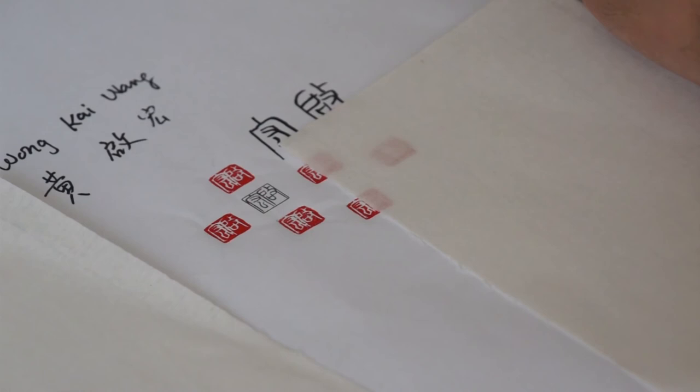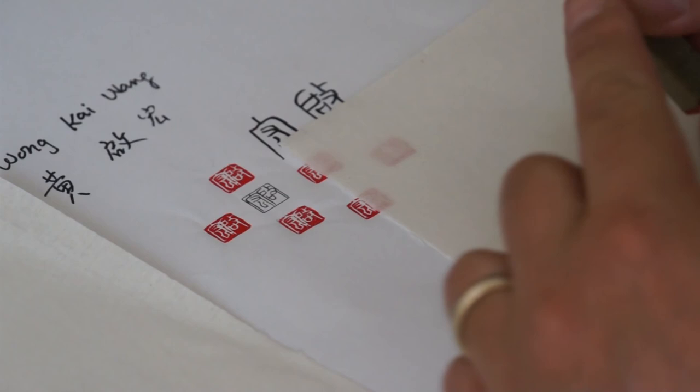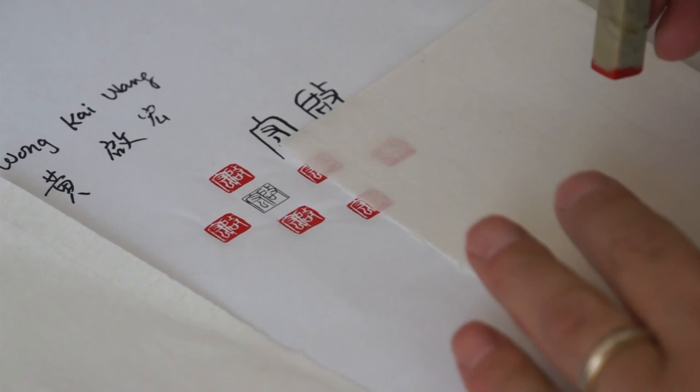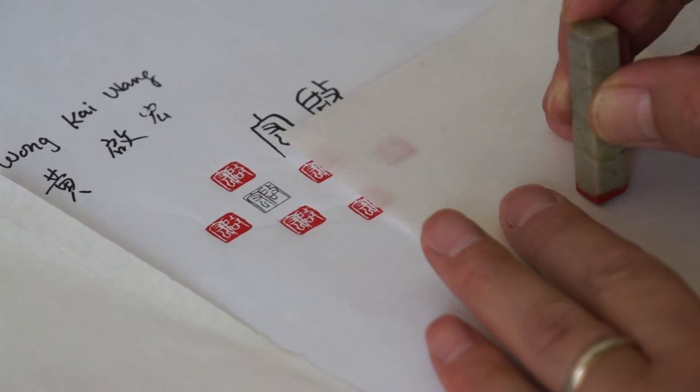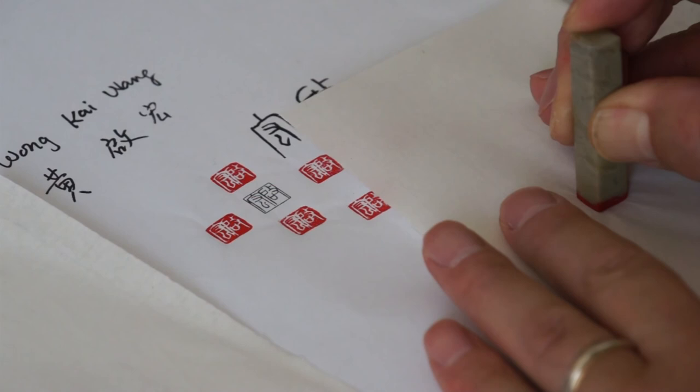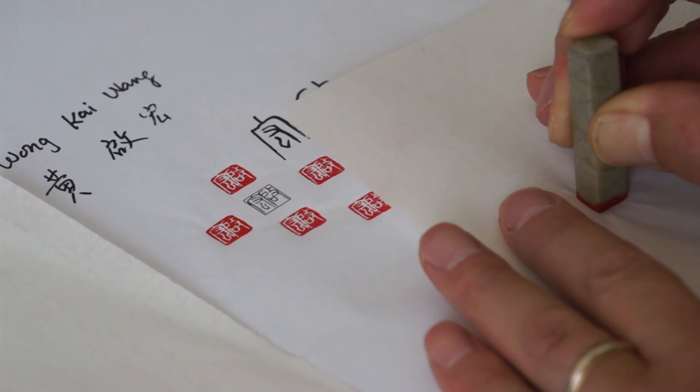There's a little chip on this corner that helps you to identify the orientation. It's on the left side. Sometimes I use a mark, natural mark on the stone. Sometimes the signature can also help. That's a nice copy.